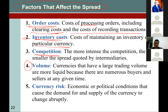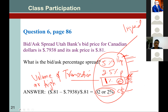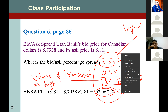Competition: the more intense the competition, the smaller the spread quoted by intermediaries. With less competition, the spread is high. That is why, in our previous example, we say the euro is liquid — because the spread is the lowest. It means the euro is the most competitive currency among these four: the Canadian dollar, peso, and rupee.